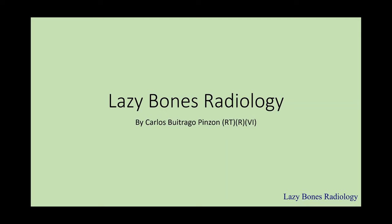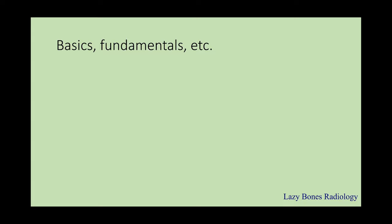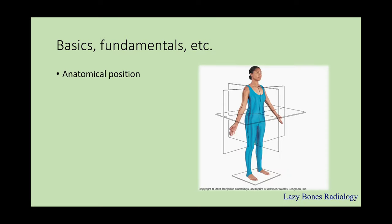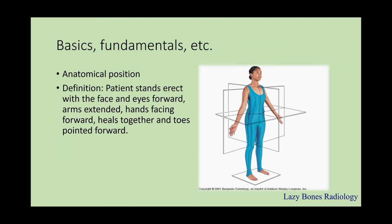Episode 1: Anatomical Relationship Terminologies. In the medical field, orientation is key. For example, if you are invited to a party but don't have the address, you'll have a difficult time getting there. That's why knowing where or what you're looking for is very important. This brings us to our first term: the anatomical position. By definition, this is when a patient stands erect with the face and eyes forward, arms extended by the sides, palms facing forward, heels together, and toes pointed forward. In simpler terms, this is known as the neutral position.